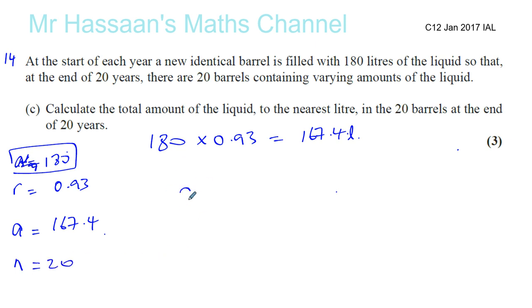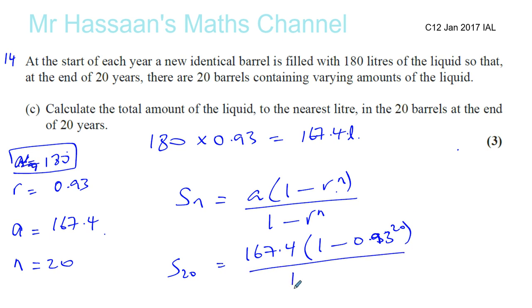So what we're going to do is we're going to say the sum of the first N terms is given by A times 1 minus R to the power of N over 1 minus R, which is a formula that we were asked to prove in the beginning. It's in the formula book anyway. So we can say that at the end of those 20 years, you're going to have 167.4 times 1 minus 0.93 to the power of 20 over 1 minus 0.93, which is 0.07.